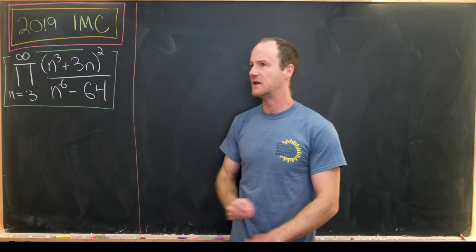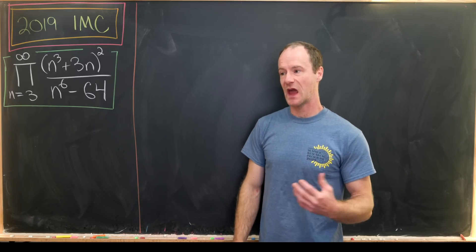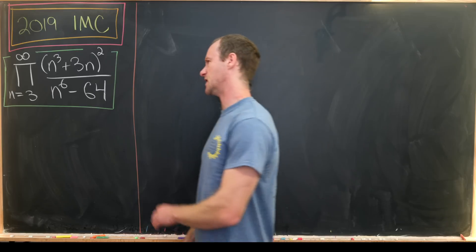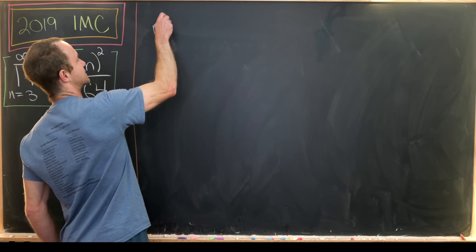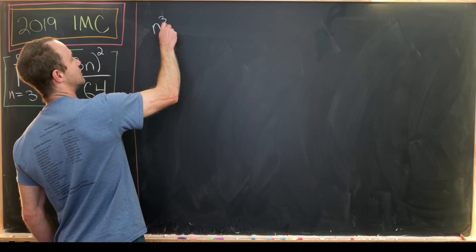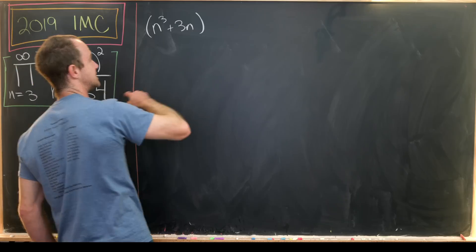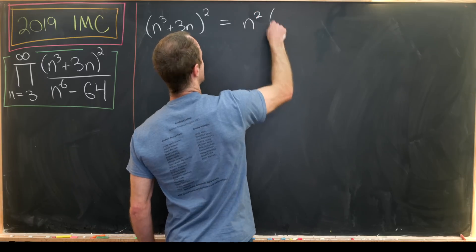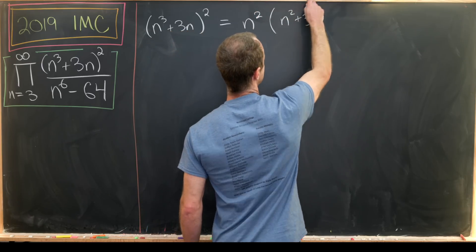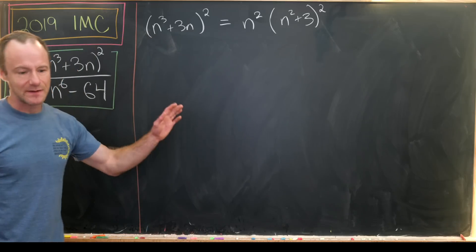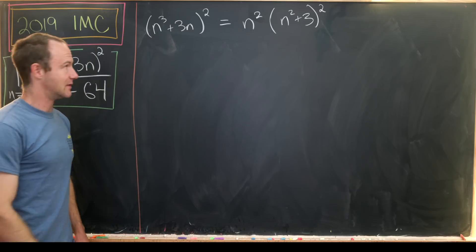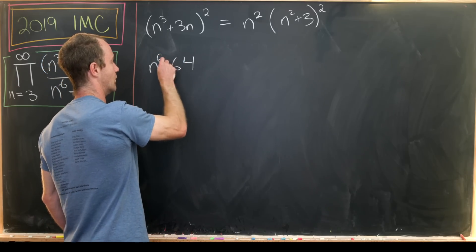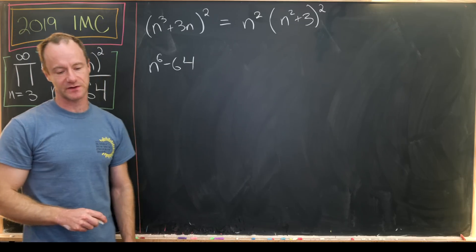Generally when we've got an infinite product, we want to see if it telescopes. To get an idea if this thing telescopes, let's see if we can rewrite the numerator and denominator. The numerator is pretty easy to rewrite — we've got n cubed plus 3n, and we can factor an n out of that. Since the whole thing is squared, we get n squared times n squared plus 3, all squared. The denominator is n to the 6 minus 64, which is both a difference of squares and a difference of cubes.